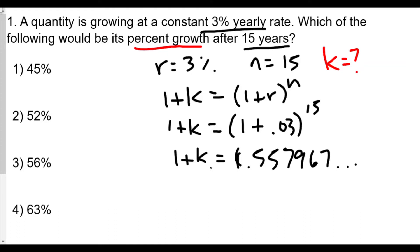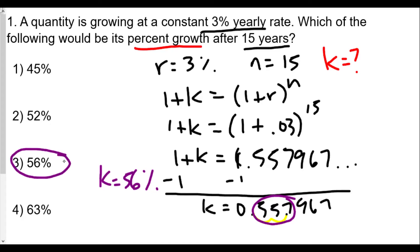So 1.557967 equals 1 plus k. Now we want to find the rate, which is k. So we subtract 1 from both sides. So k is equal to 0.557967, which in this case to the nearest percent, we're going to multiply by 100, which means a decimal slide of two spaces. And so we're looking at 55.7%, which will round up to k equals 56%. Therefore, the answer for number one is choice three.